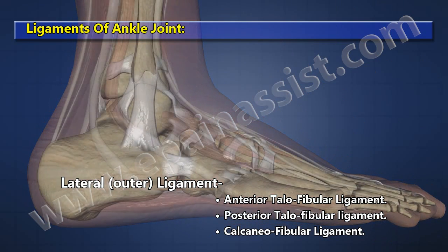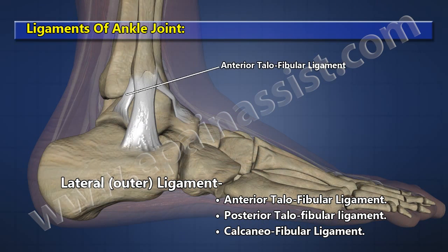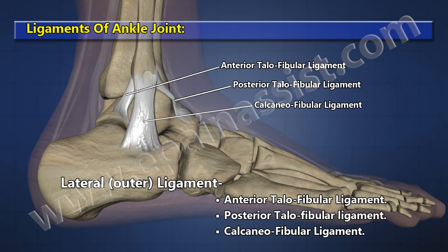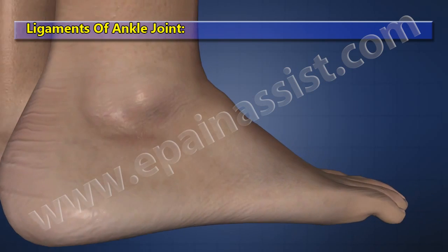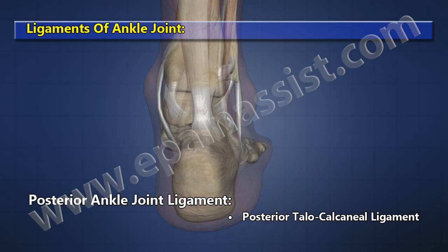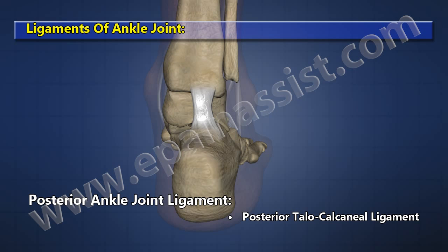The lateral outer ligament includes the anterior talofibular ligament, posterior talofibular ligament, and calcaneofibular ligament. The posterior ankle joint ligament is the posterior talofibular ligament.